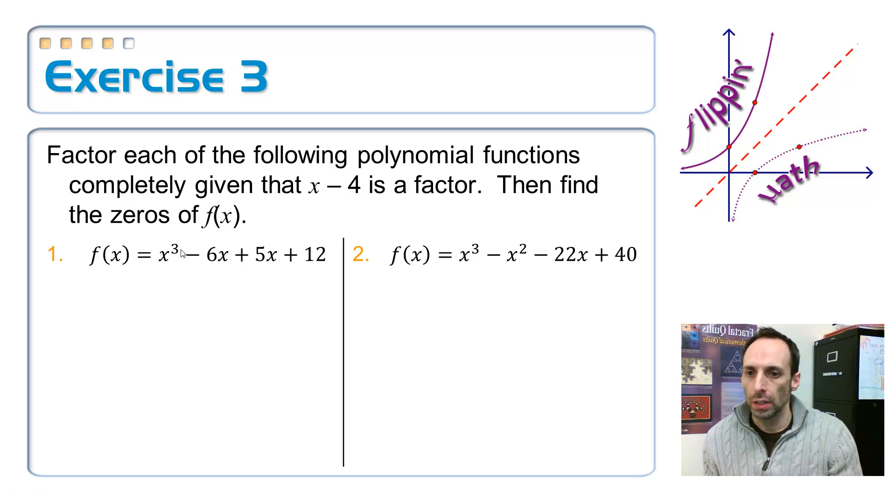Factor each of the following polynomials completely, given that x minus 4 is a factor, and then find the rest of the zeros. So x minus 4 is a factor, so what I'm going to divide by is actually a positive 4. That's going to go outside of the division box. I think this is a typo. I think that should be an x squared there, because why would there be a negative 6x and a 5x? Anyway, so if that one is a squared, then I'm not missing anything. I'm adding 1, negative 6, 5, and a 12.